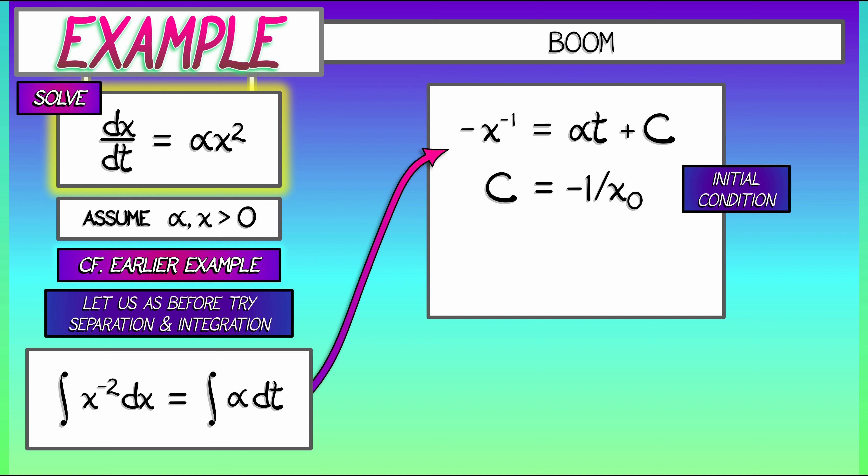Now a little bit of algebra to solve for x gives us that x is 1 over x0 to the minus 1 minus alpha times t. All right, that's it. We did it. We solved it. Job done. Good job, folks. Let's go home. Oh, wait a minute.